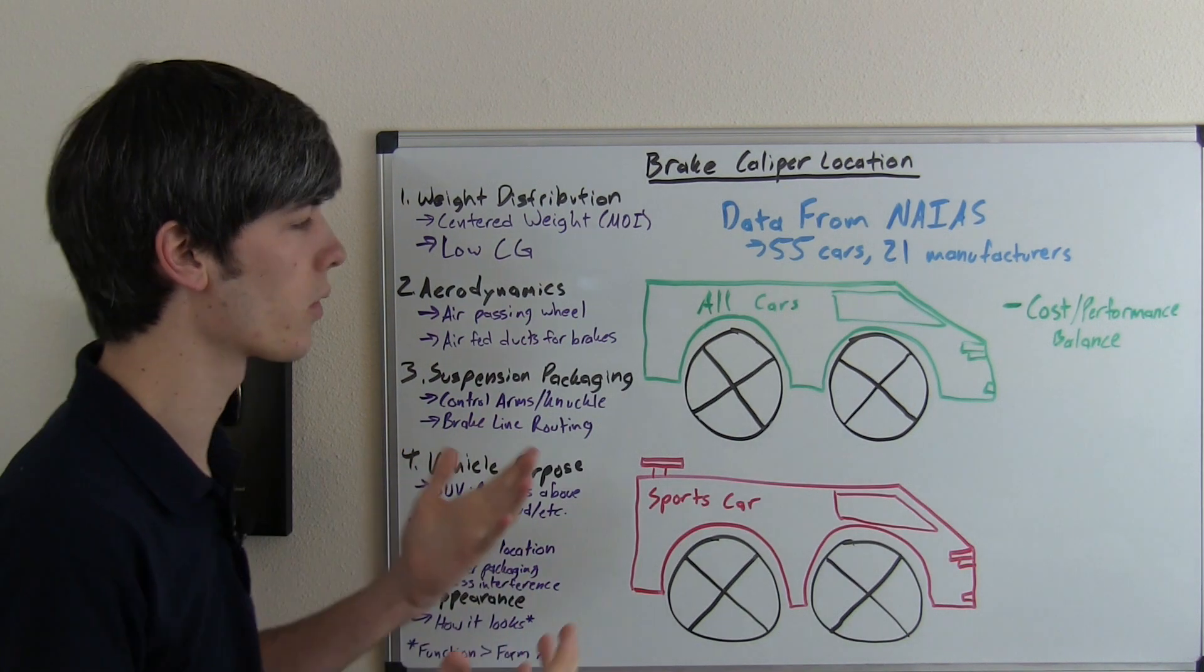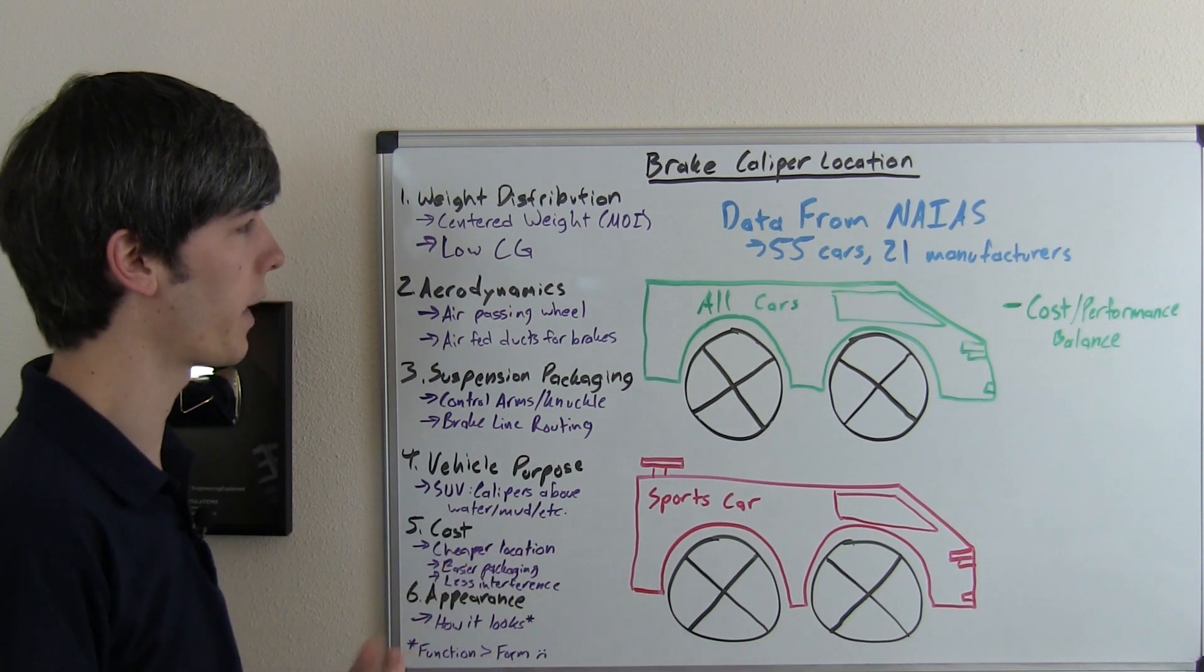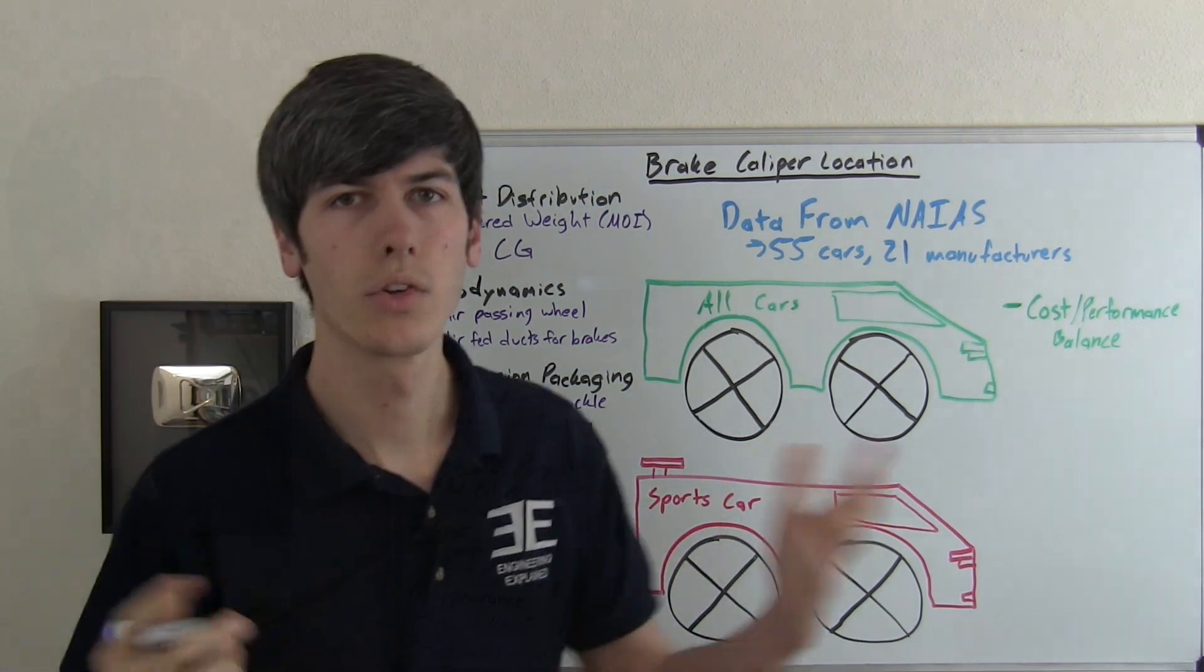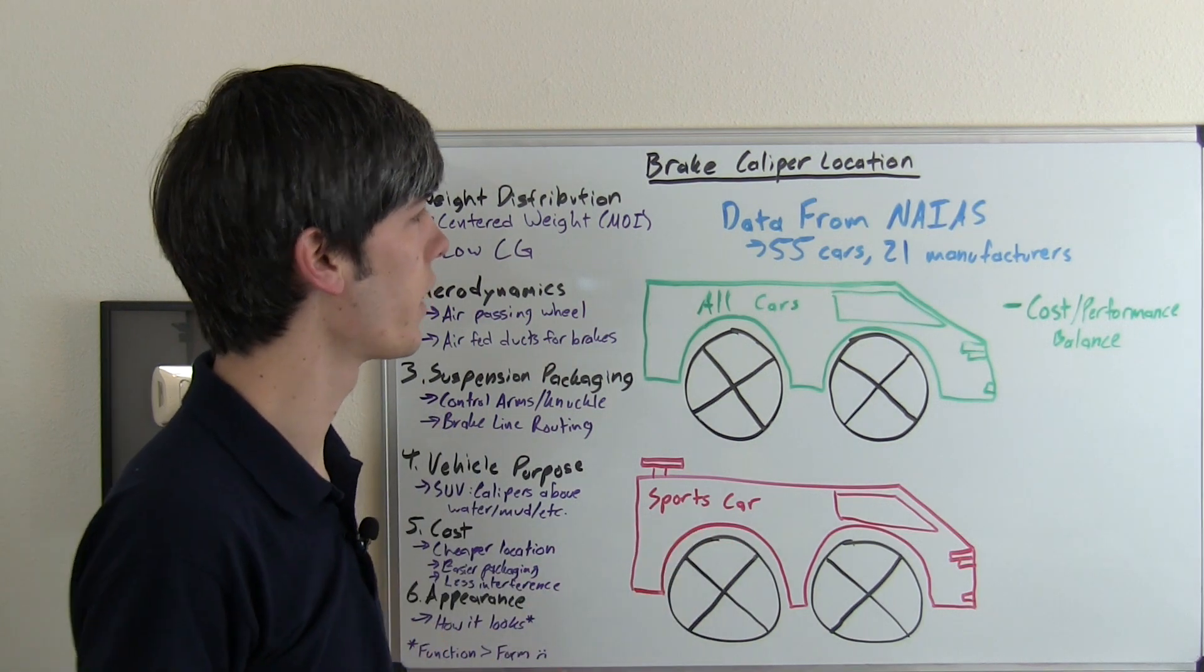And then also appearance always plays a role so if there's a location that the designer thinks looks best then that may play a role in where the caliper ends up. So now let's look at some actual vehicles and look at some hard data.